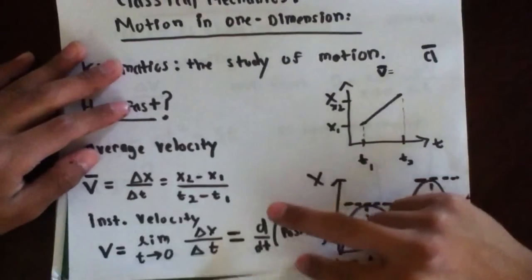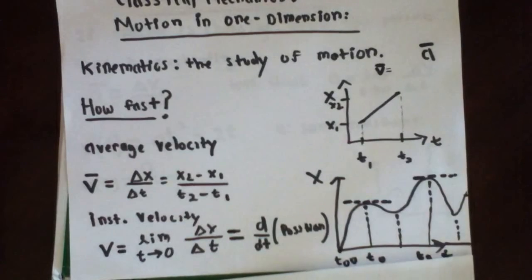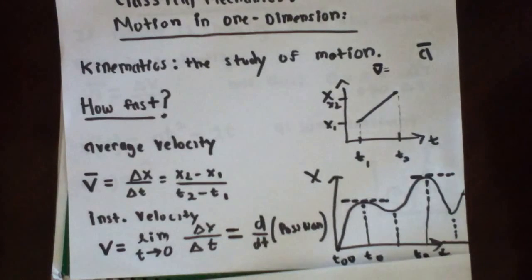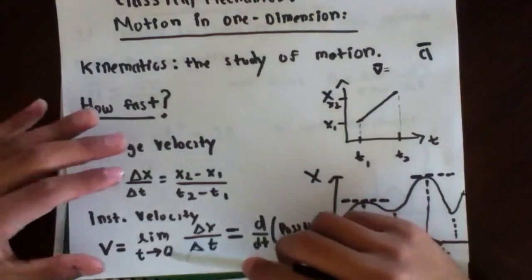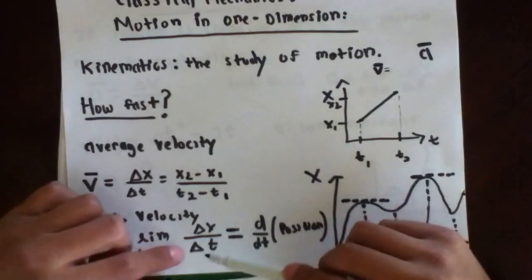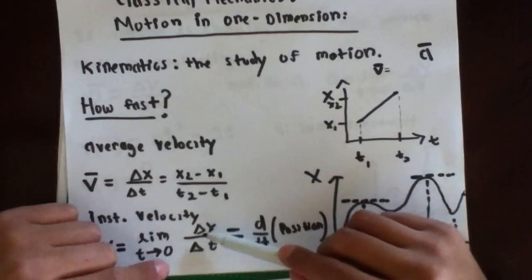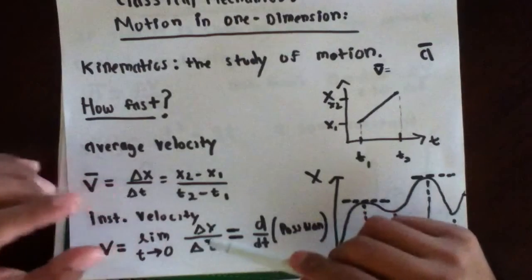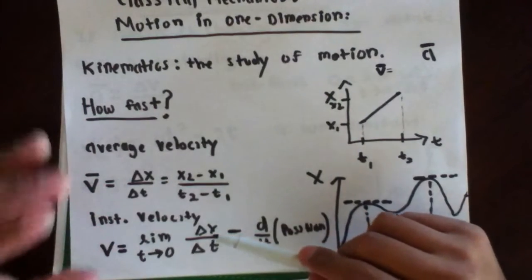And the instantaneous velocity, if you haven't studied much physics before, it seems a little bit abstract. And what that means is mathematically it's as the time interval approaches zero, what's the change in position associated with that very infinitesimally small time interval.